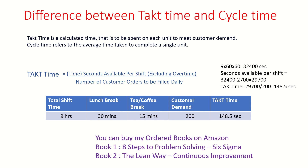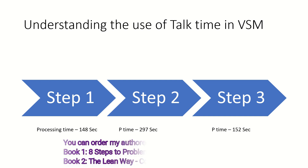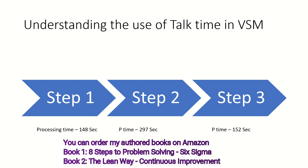This is how takt time is calculated. Now, understanding the use of takt time in a VSM — suppose it is a three-step process, continuing with the same example. The processing time of each step: some people call it processing time, some call it cycle time — it is the time required to process that particular step. Processing time of step one is 148 seconds, step two is 297 seconds, and step three is 152 seconds.